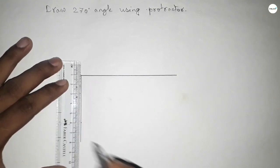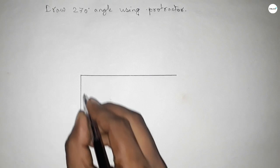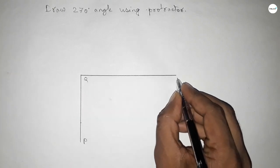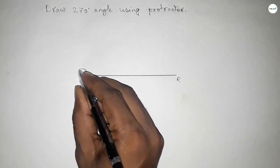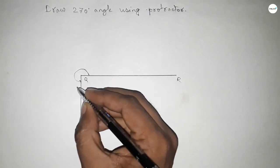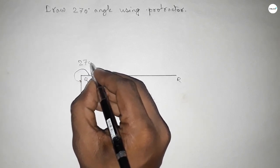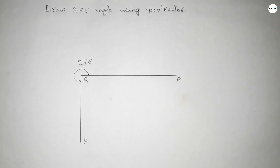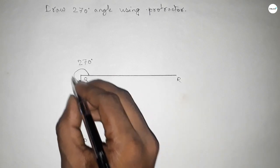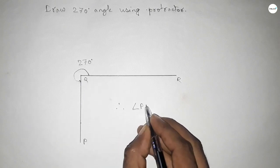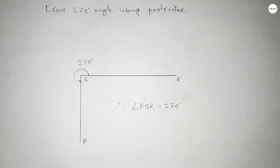Joining this to get 270 degrees, we got a 270-degree angle PQR. This is a 270-degree angle. Therefore, angle PQR equals 270 degrees.